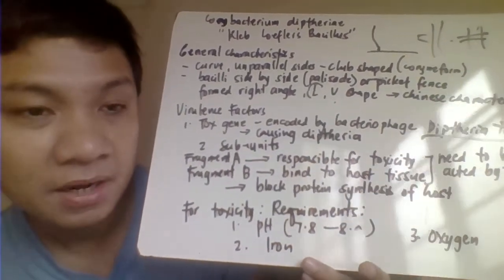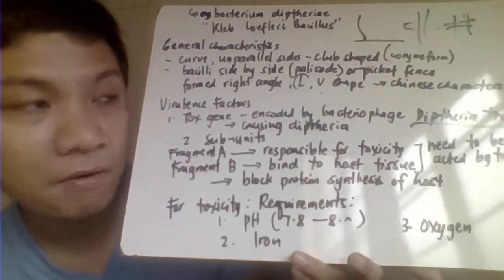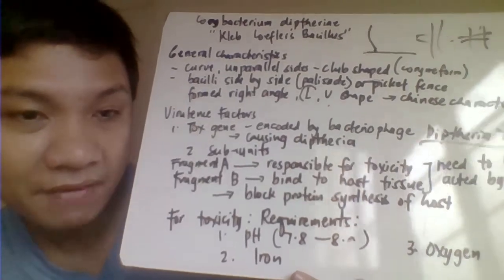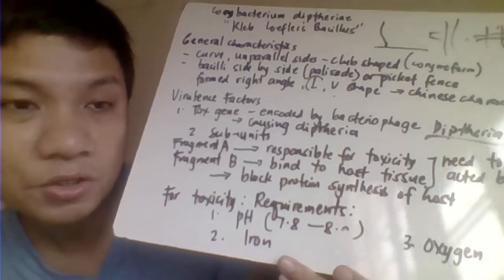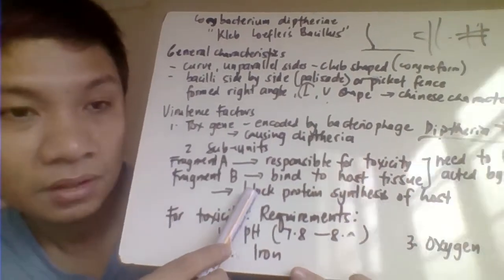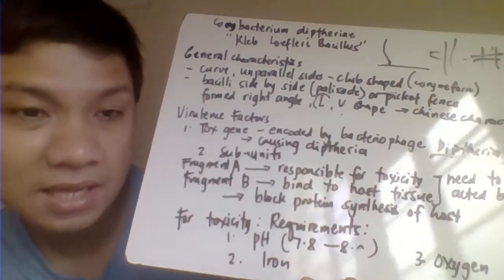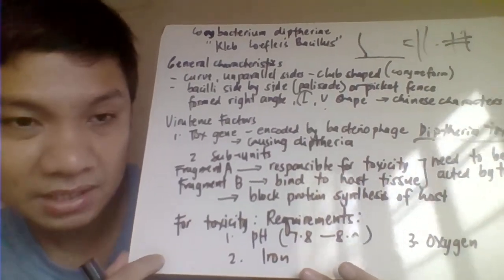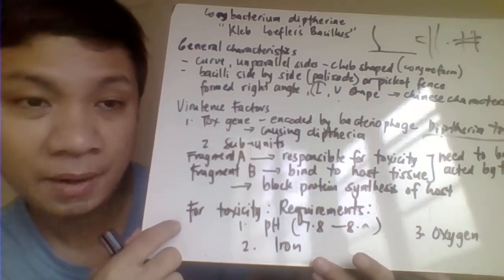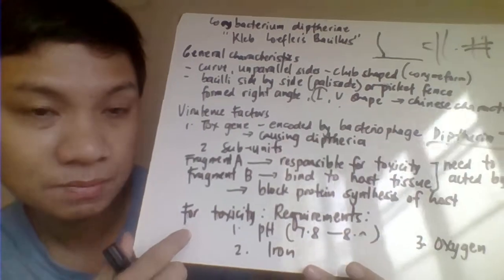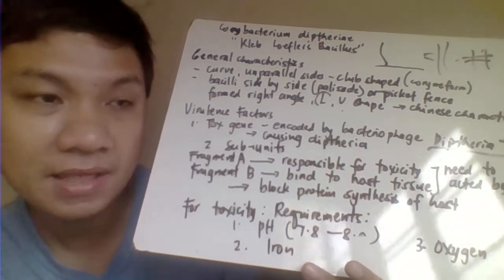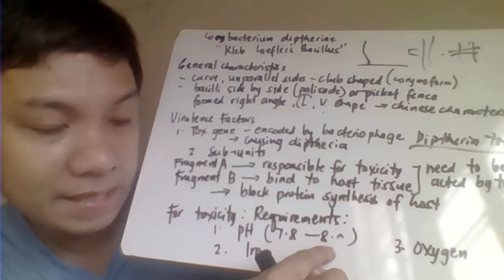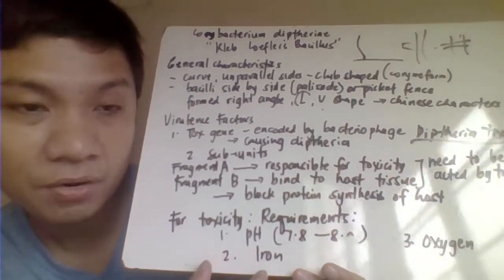If Corynebacterium diphtheriae has been infected by a bacteriophage that injects the tox gene, it can cause diphtheria. Diphtheria is highly fatal — it could result in the death of the entire tissue or even the human if left untreated, because it blocks protein synthesis of the host. The toxicity of the diphtheria toxin requires an alkaline pH of 7.8 to 8, plus the presence of iron and oxygen.